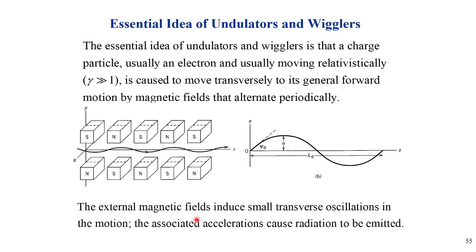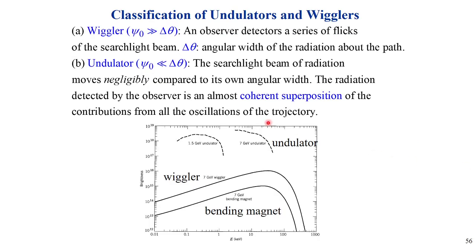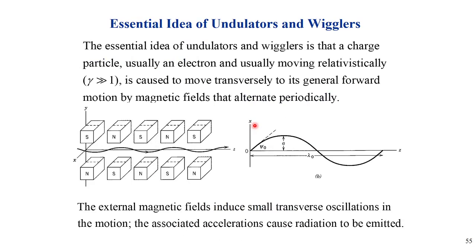The external magnetic fields induce small transverse oscillations in the motion, and the associated acceleration causes radiation to be emitted — that is the angle of the particle motion. For a wiggler, the deflection angle phi is very large, much greater than delta-theta, where delta-theta is the angular width of the radiation.